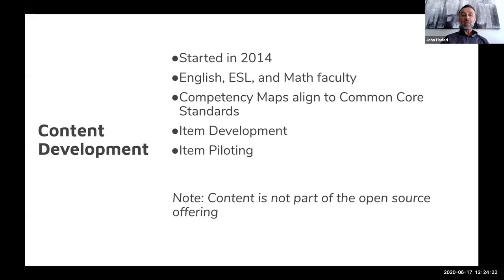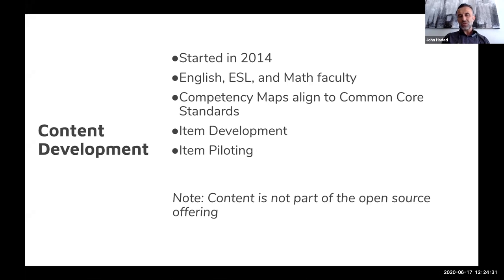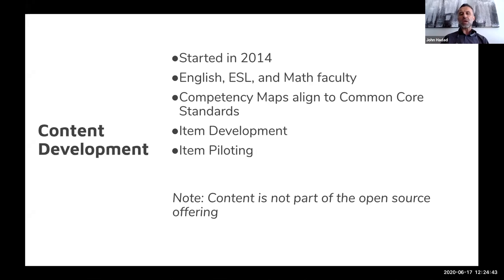We leveraged the actual platform for testing out the content — using it as an item piloting tool to calibrate the items, remove any items with disproportionate impact, and ensure that items were neutral and didn't demonstrate any kind of bias. Unfortunately, the content is not part of the open source offering — as you can imagine, it's an expensive undertaking — though the state of California anticipates that at some time we might be able to use some of that.